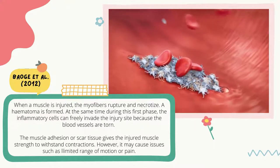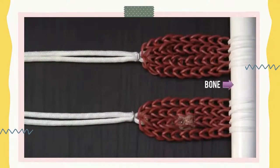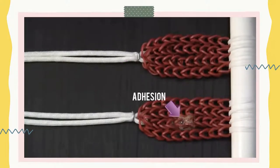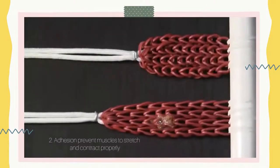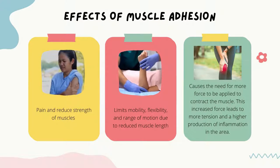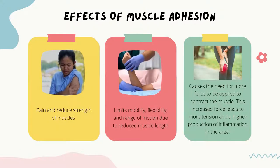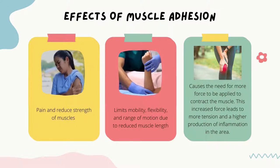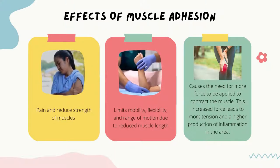However, it may cause issues such as limited range of motion or pain. This setup is the representation of muscle, bone and tendon. Here, we have a normal muscle and a muscle with adhesion. Muscle functions to stretch and contract. However, with the presence of adhesion, it prevents muscles from stretching and contracting properly and they are unable to slide freely over one another. Muscle adhesion can lead to pain and reduced strength of muscle. It also limits mobility, flexibility and range of motion due to reduced muscle length. Muscle adhesion also causes the need for more force to be applied to contract the muscle, leading to more tension and higher production of inflammation in the area.